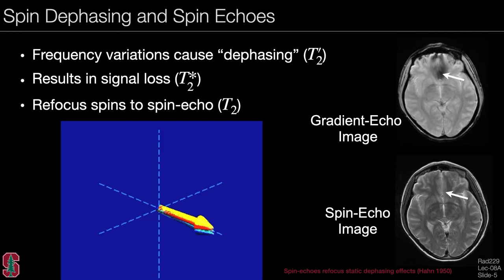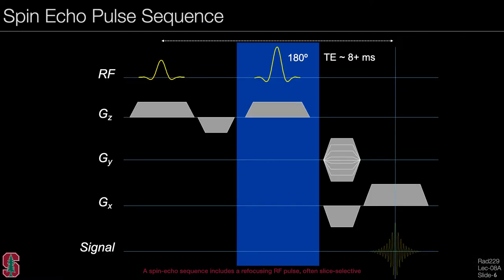The spin echo has been around since very early on in MRI and was discovered by Erwin Hahn. The basic spin echo pulse sequence has the same waveforms as any gradient echo sequence, but with the addition of a refocusing RF pulse — often slice selective — in the middle. This pulse occurs halfway from the excitation to the echo time.